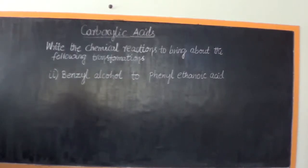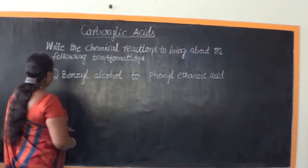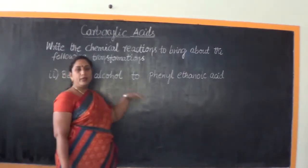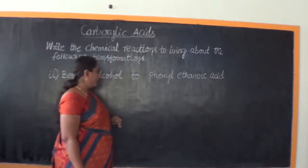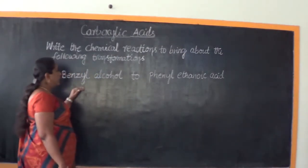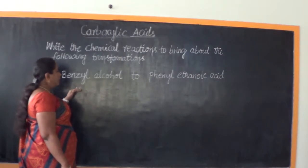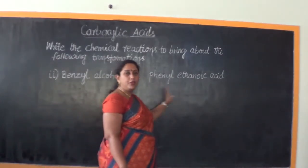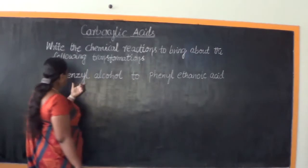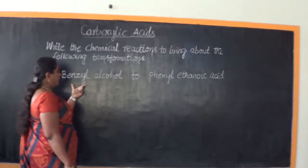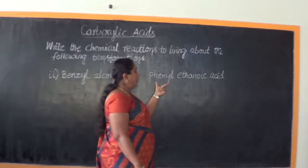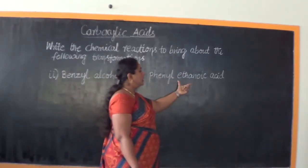In this video lesson, let us try to understand the conversion of benzyl alcohol to phenylethanoic acid. I want you to focus your attention on the given raw material and the product of our requirement. The raw material is benzyl alcohol, and this has to be converted into phenylethanoic acid.